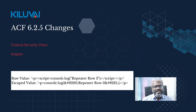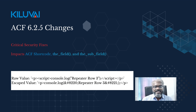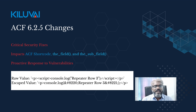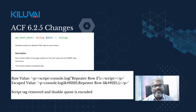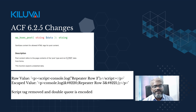First things first, let's get an overview of what changed in ACF 6.2.5. This update addresses a crucial security fix, particularly impacting the ACF shortcode, the_field, and the_subfield. Starting from this version, the ACF shortcode's output will be escaped by the WordPress HTML escaping function wp_kses. This will remove potentially unsafe HTML like scripts and iframes.